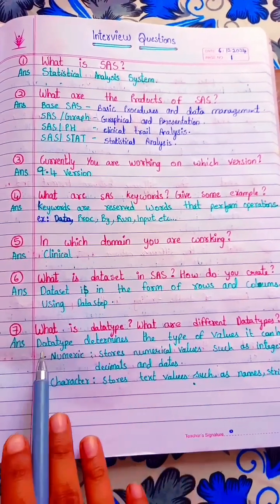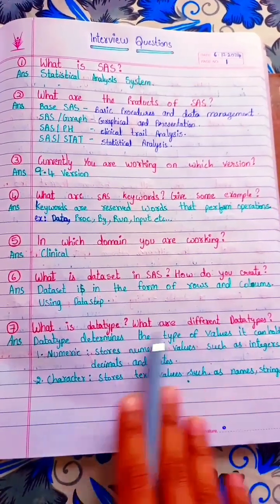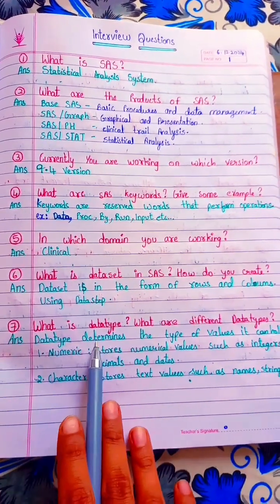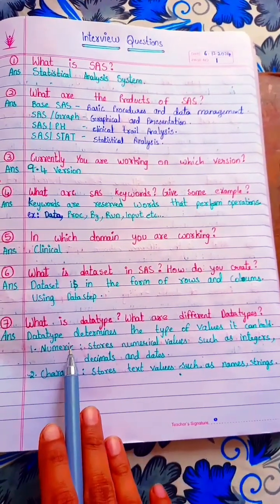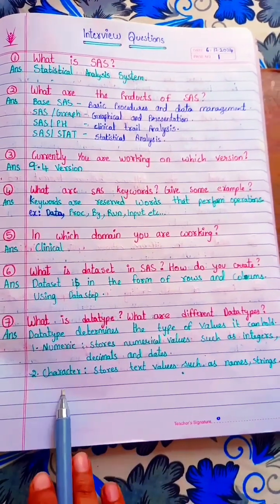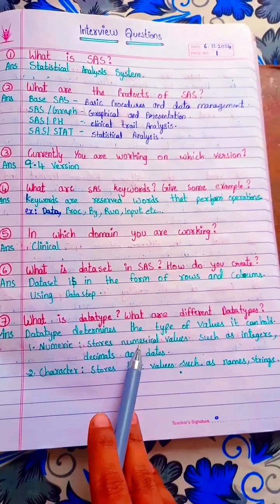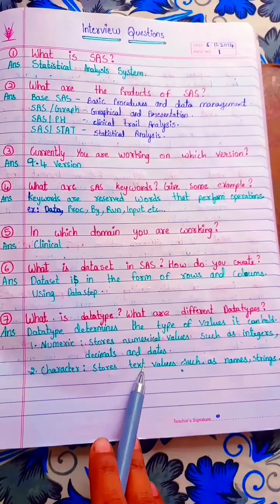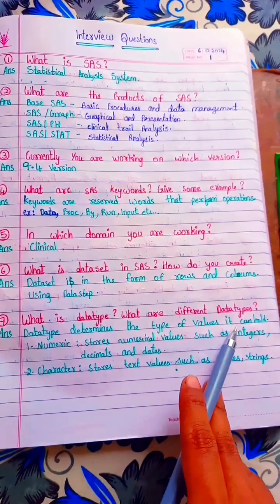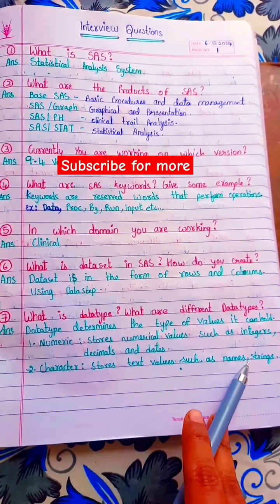What are the data types? A data type determines the type of value it can hold. We have two data types: numeric and character. Numeric stores numerical values such as integers, decimals, and dates. Character stores text values such as names, strings, and alphabets.